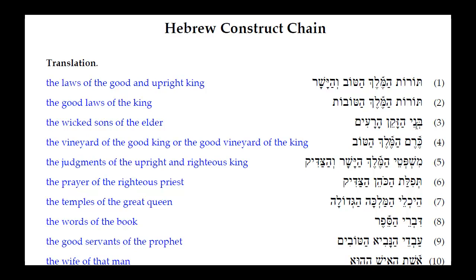Number three: B'nai HaZekain HaRa'in. The adjective here has a masculine plural ending. Does it agree with HaZekain? No — Zekain is masculine singular. It agrees with B'nai, which is masculine plural construct (the Seri Yod tells us this). So this would be 'the evil sons' or 'the wicked sons of the elder.'